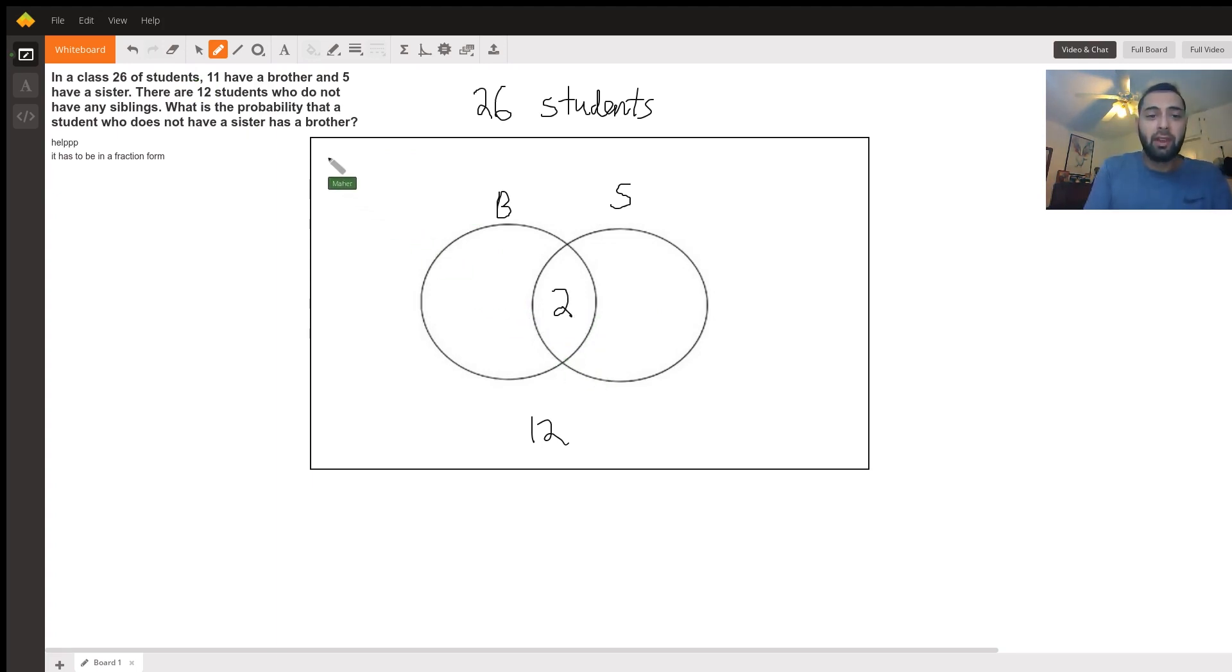And if 11 have a brother but 2 of them also have a sister, only 9 have just a brother without a sister. And if there's 5 that have a sister and 2 of those have brothers, there's only 3 that have just a sister. And now if we add 12 plus 9, 21 plus 2, 23 plus 3, 26. So we perfectly filled out our Venn diagram and we have the right amount of students.